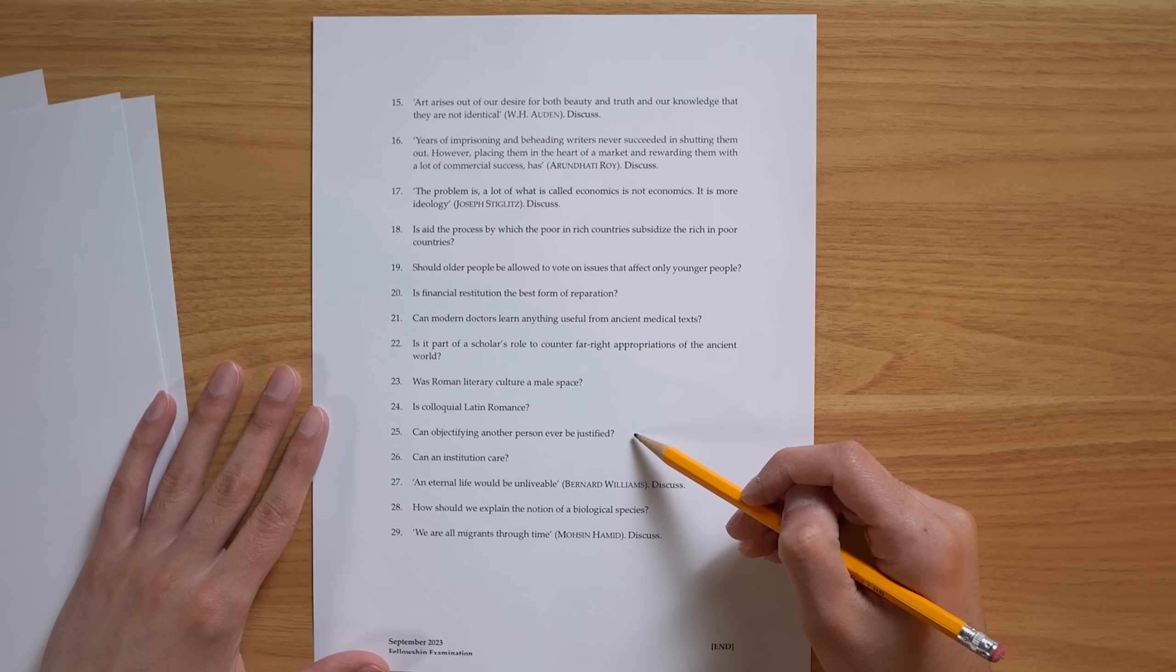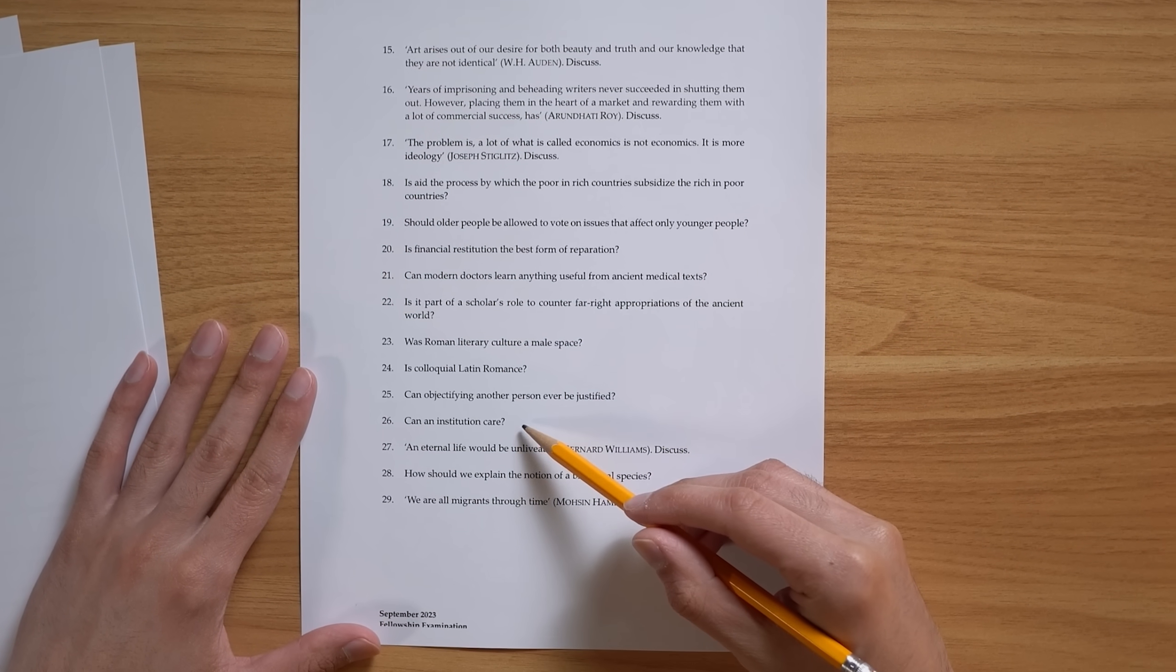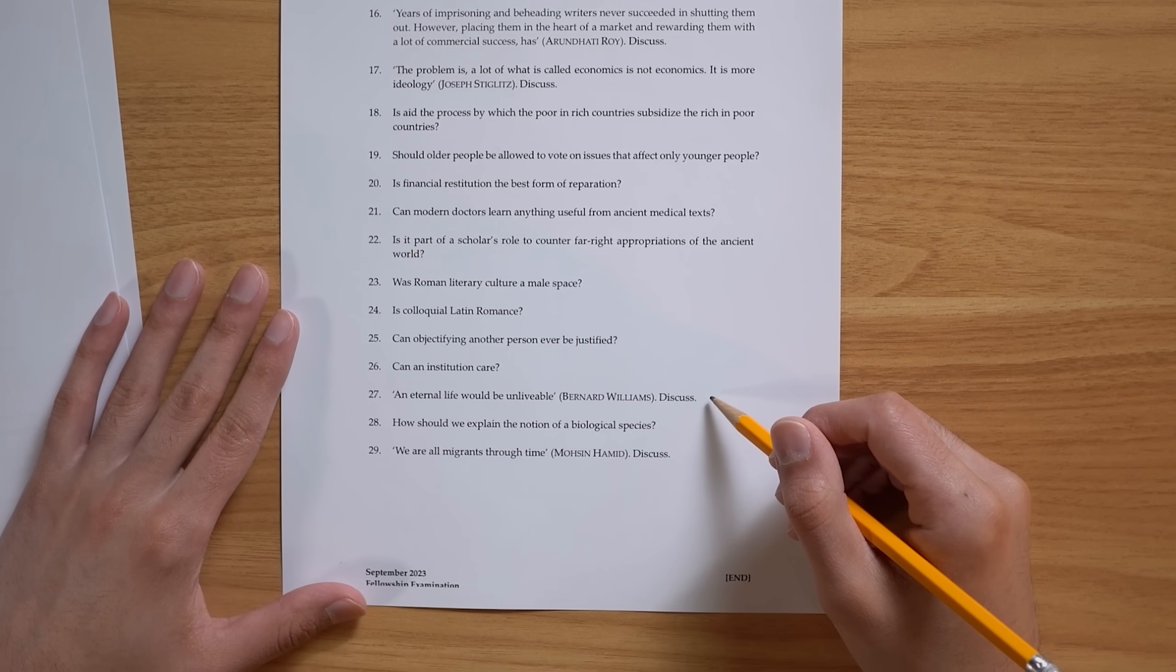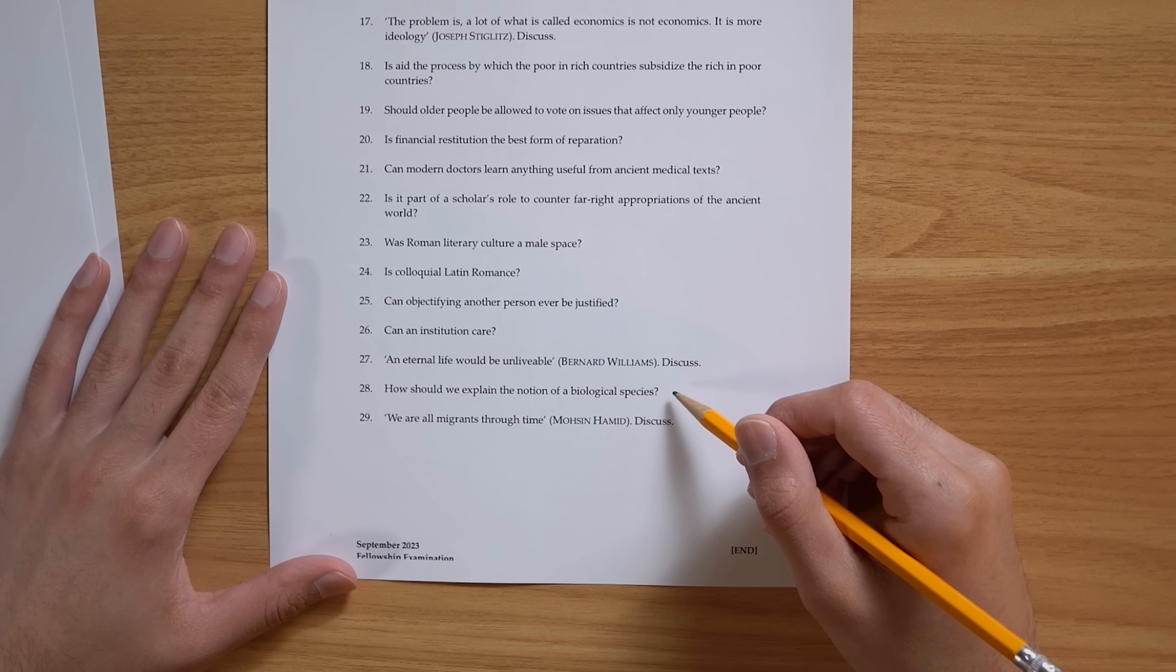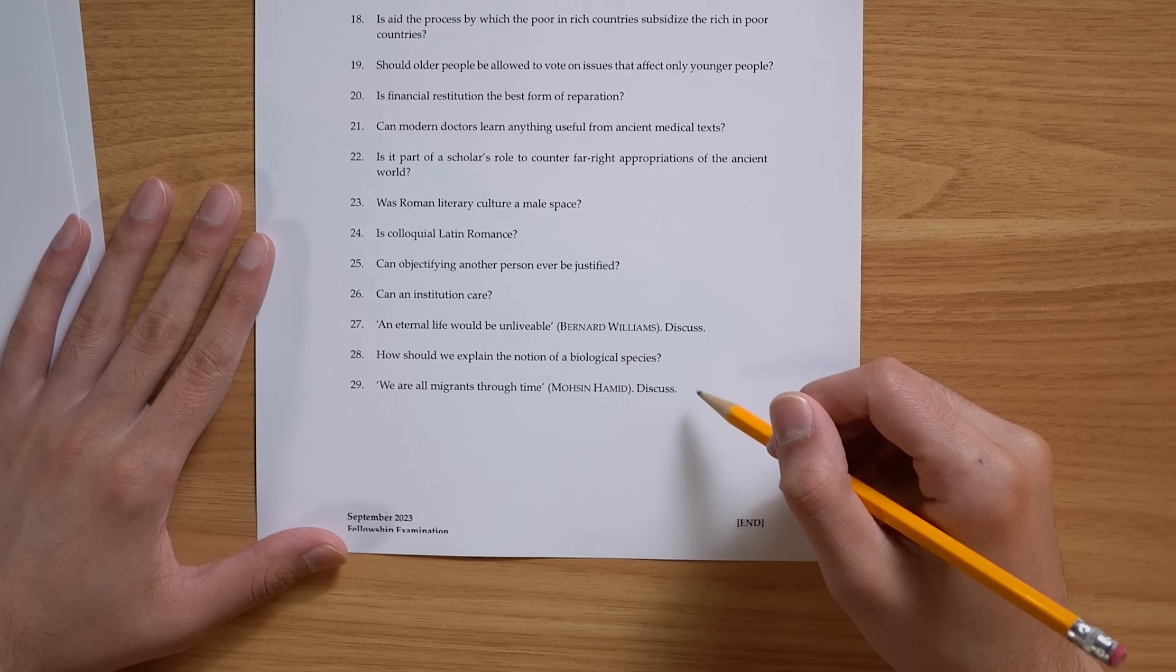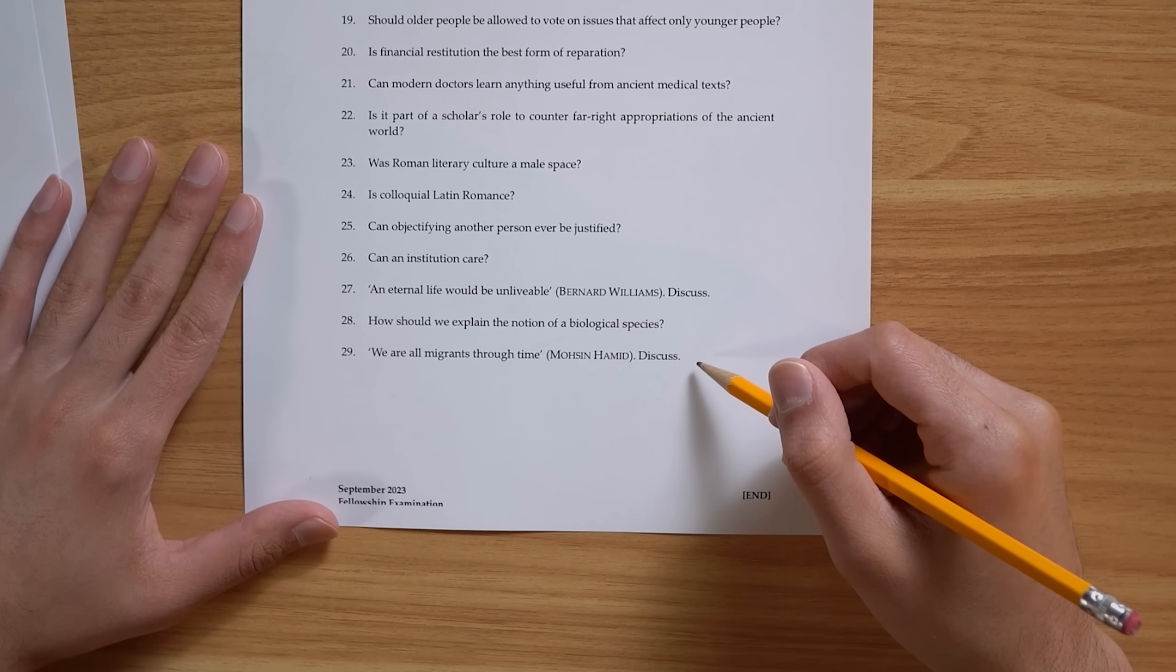I don't think I need to explain what makes this exam so difficult. But you know what? Maybe these are just some outliers. Let's look at a couple other examples. Can objectifying another person ever be justified? Can an institution care? An eternal life would be unlivable. Discuss. How should we explain the notion of a biological species? We are all migrants through time. Discuss.